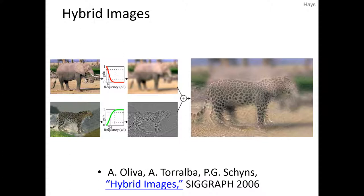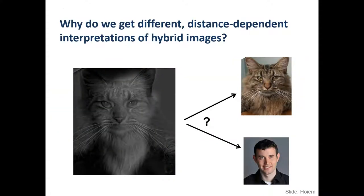The idea is very simple: you try to create a high-pass version of one image and a low-pass version of another, and then merge them together. At one distance you see the high-pass result, and at another distance you see the low-pass result — that's basically it. Here's another example: a hybrid image of a cat and a person.